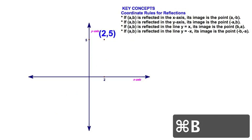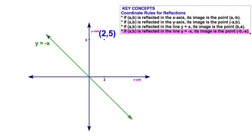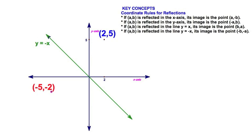Let's look at one more: the line y equals negative x. When I reflect across this line, according to the rule, the point (a, b) will reflect to (negative b, negative a). So (2, 5) reflects to (-5, -2) — reversing the coordinates and negating both. And there you go.